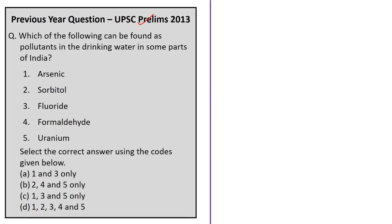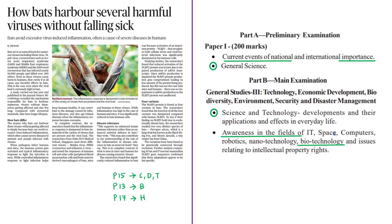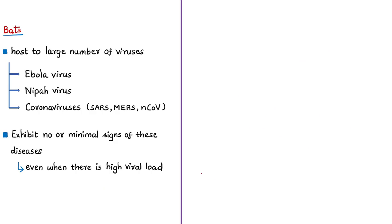This news article provides the reasons behind why bats do not get affected even though they harbor numerous viruses. Bats are the only flying mammals and host a large number of high-profile viruses such as Ebola virus, Nipah virus, and coronaviruses such as SARS and MERS. As per the news article, bats are also host for the 2019 novel coronavirus.